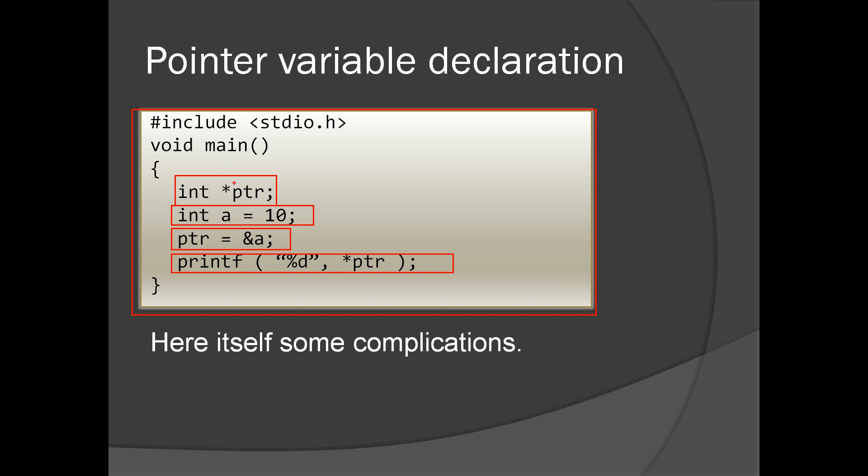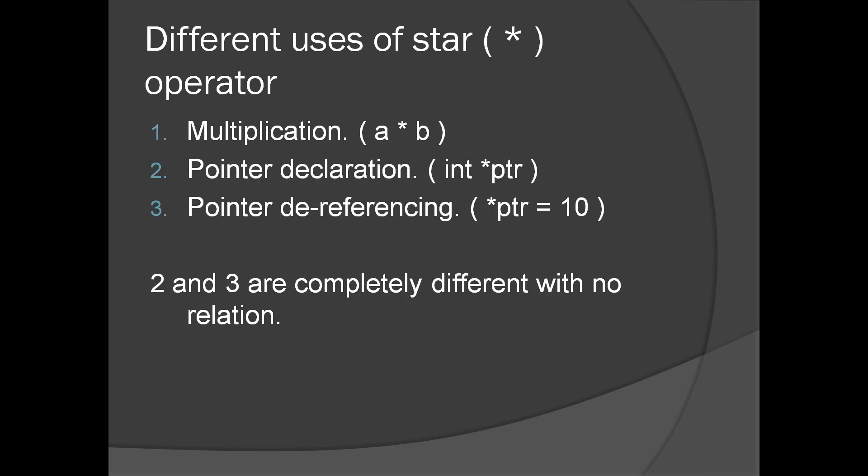The star here and the star there have entirely different meanings. These are the different uses of the star operator in C programming language. One is obviously multiplication, which most of us know. Second is pointer declaration, which is int star. Third is pointer dereferencing. The second and third are completely different with no relation — just as multiplication and pointer declaration have no relation.